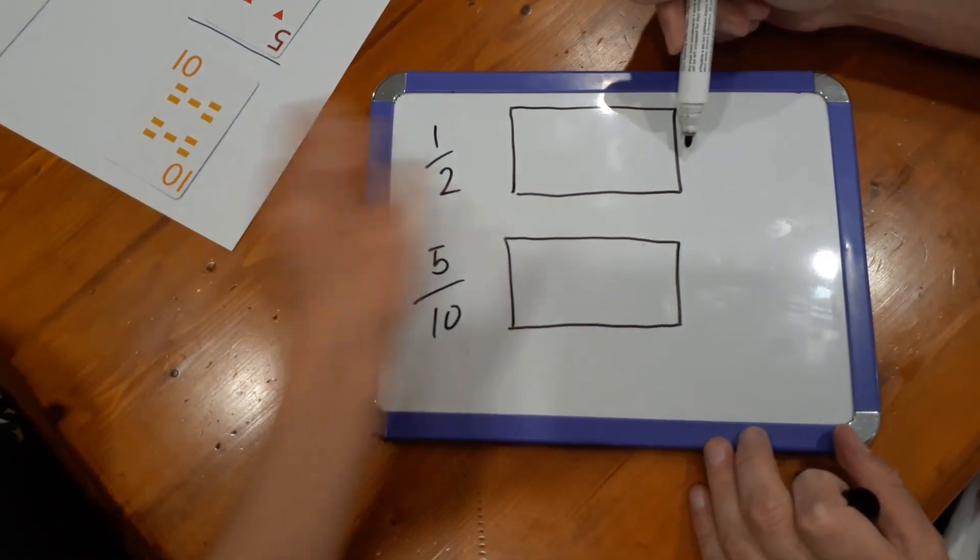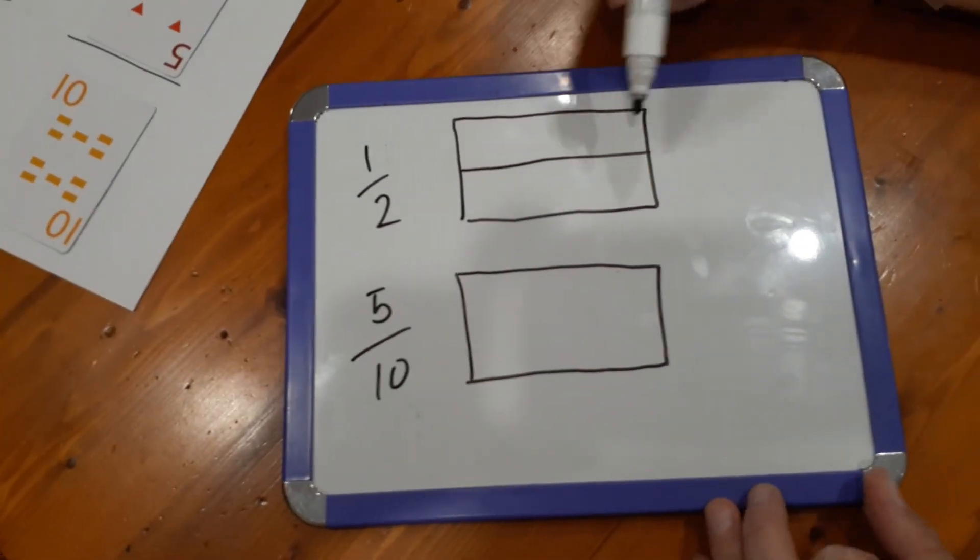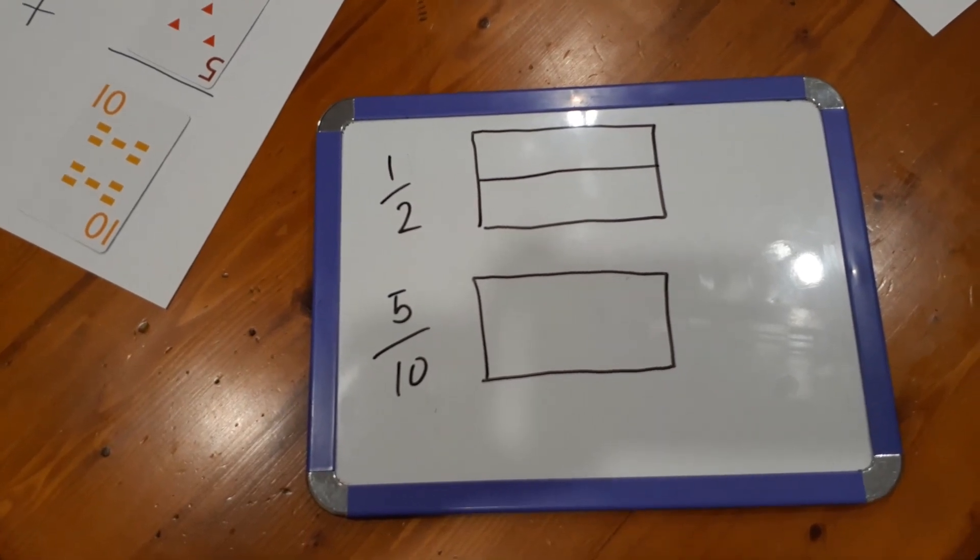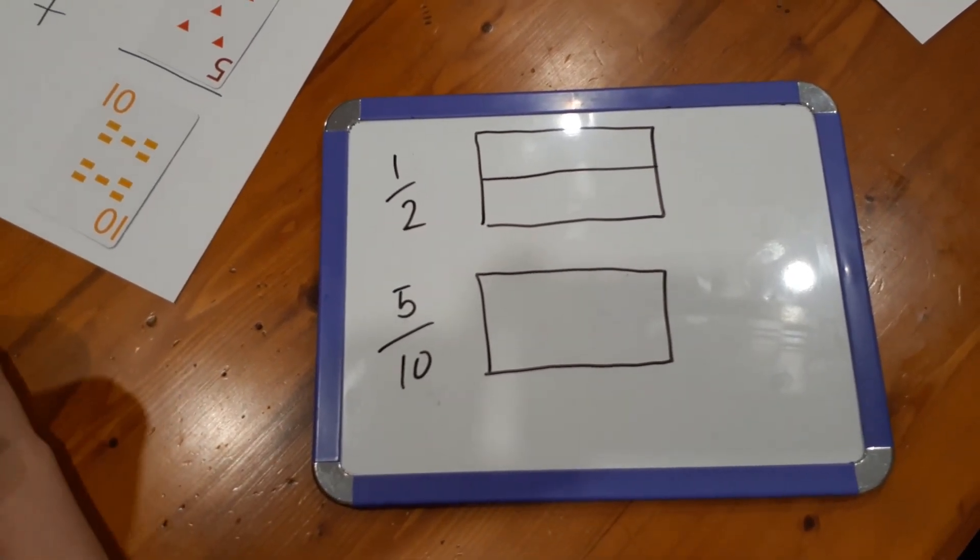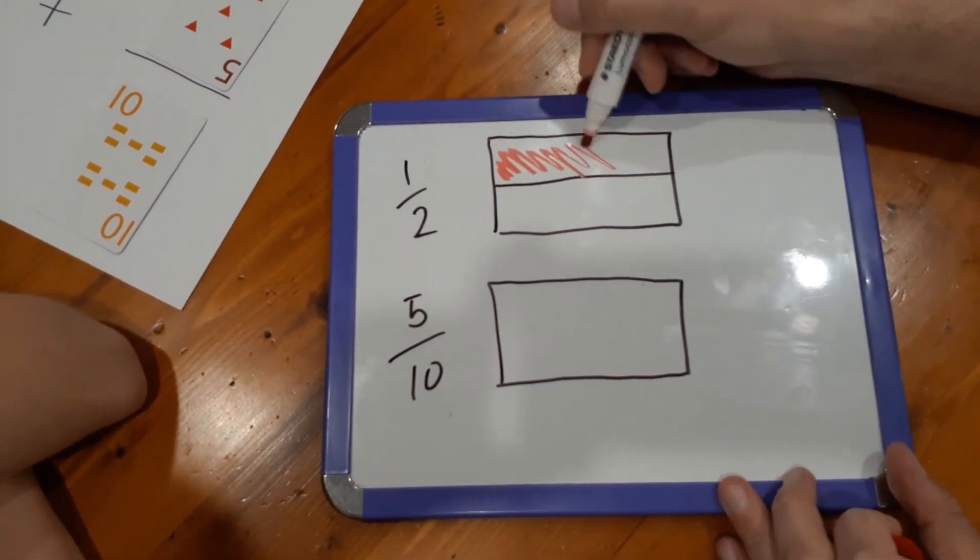So what would a half look like? Split that one in half. Now do you want to split it in half that way or do you want to split it in half that way? I think it might be easier to do this way. I'm just thinking what you're probably going to do with tenths. Okay, so you split in half that way, and then how many pieces do I color in? One.